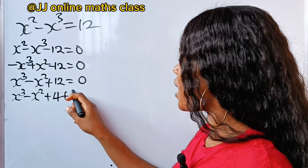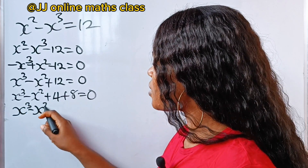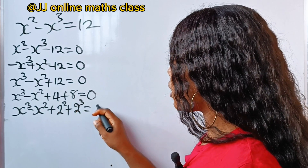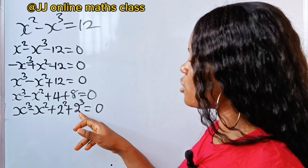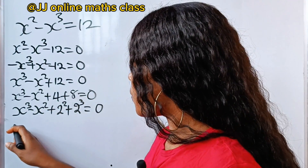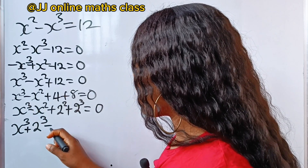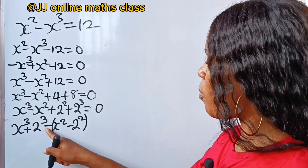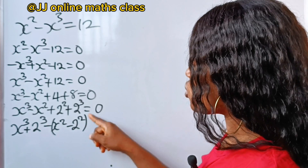So we are going to use 4 and 8, the same thing as 4 plus 8, equal to 0. Now we have x to the power of 3 minus x squared, and 4 is 2 squared and 8 is 2 cubed. So we have x to the power of 3 and 2 to the power of 3 together, and minus x squared and minus 2 squared together. So we have x to the power of 3 plus 2 to the power of 3, then minus x squared minus 2 squared.